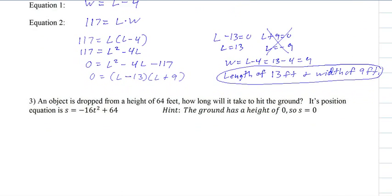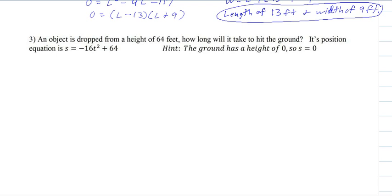All right. Last one. This is a slightly different one. This is an object being dropped from a height of 64 feet. How long will it take to hit the ground? So this is our position function. This is for feet. And what happens is S is your position. So S is our height.